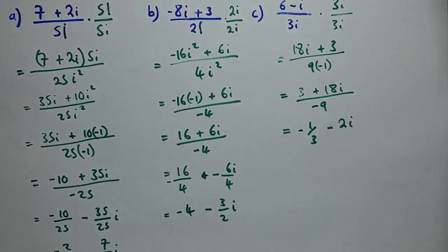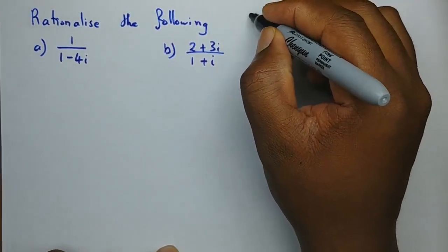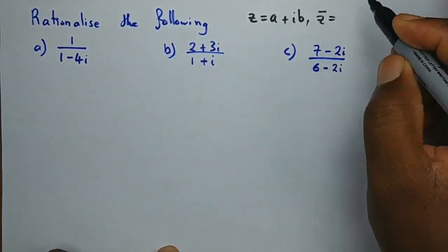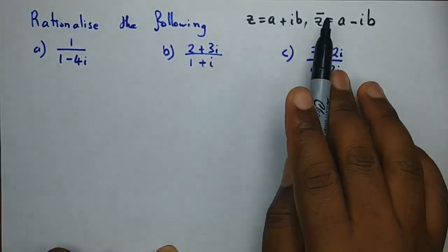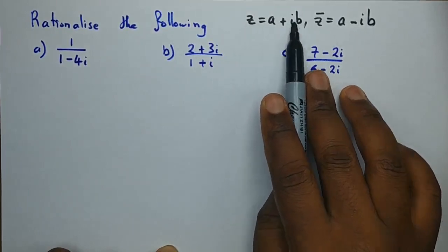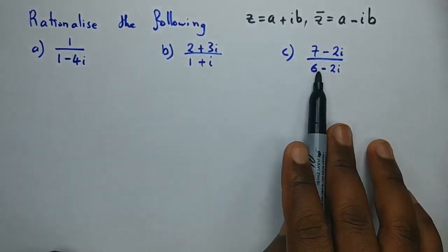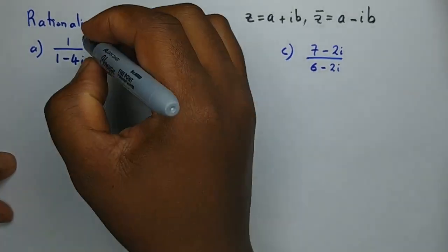Now let's look at another way to rationalize. When you have a binomial complex denominator, you multiply both numerator and denominator by the conjugate of the denominator. The conjugate of z = a + ib is z-bar = a − ib; you simply change the sign between the real and imaginary parts. So the conjugate of 1 minus 4i is 1 plus 4i, and the conjugate of 6 minus something is 6 plus that something.